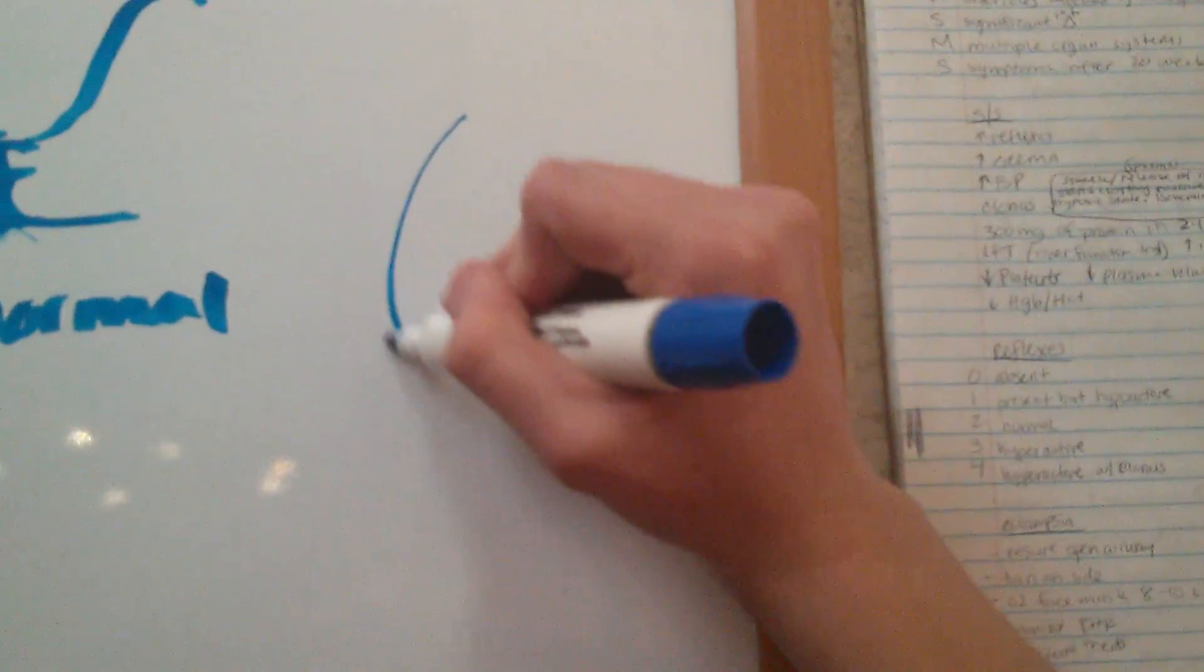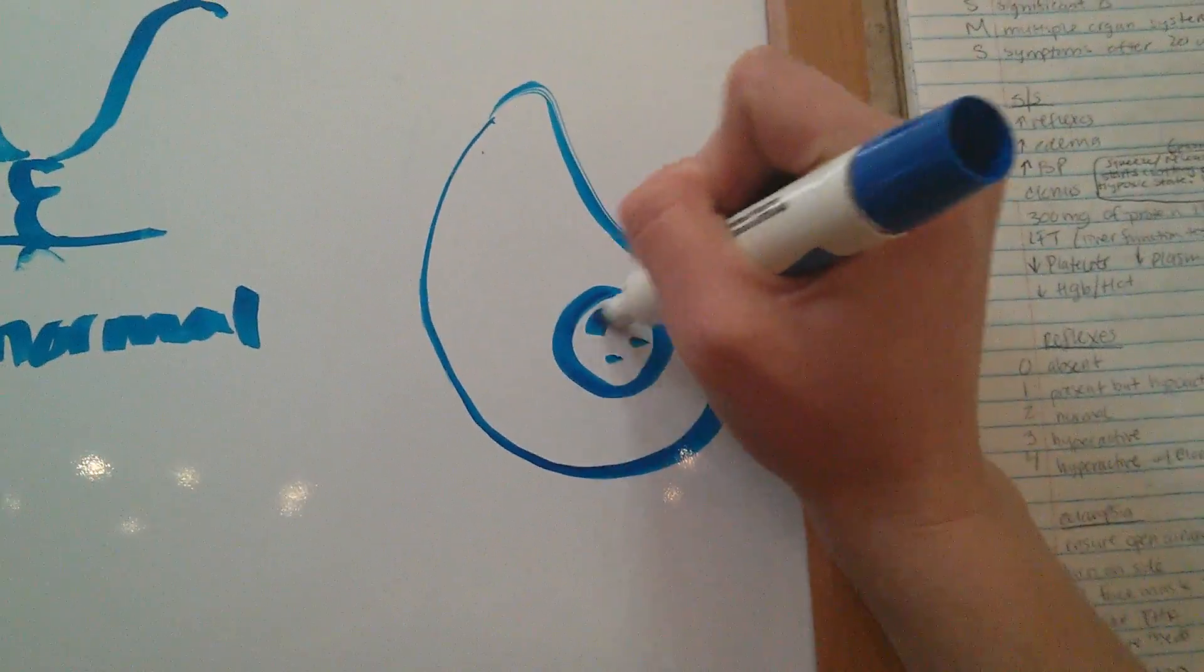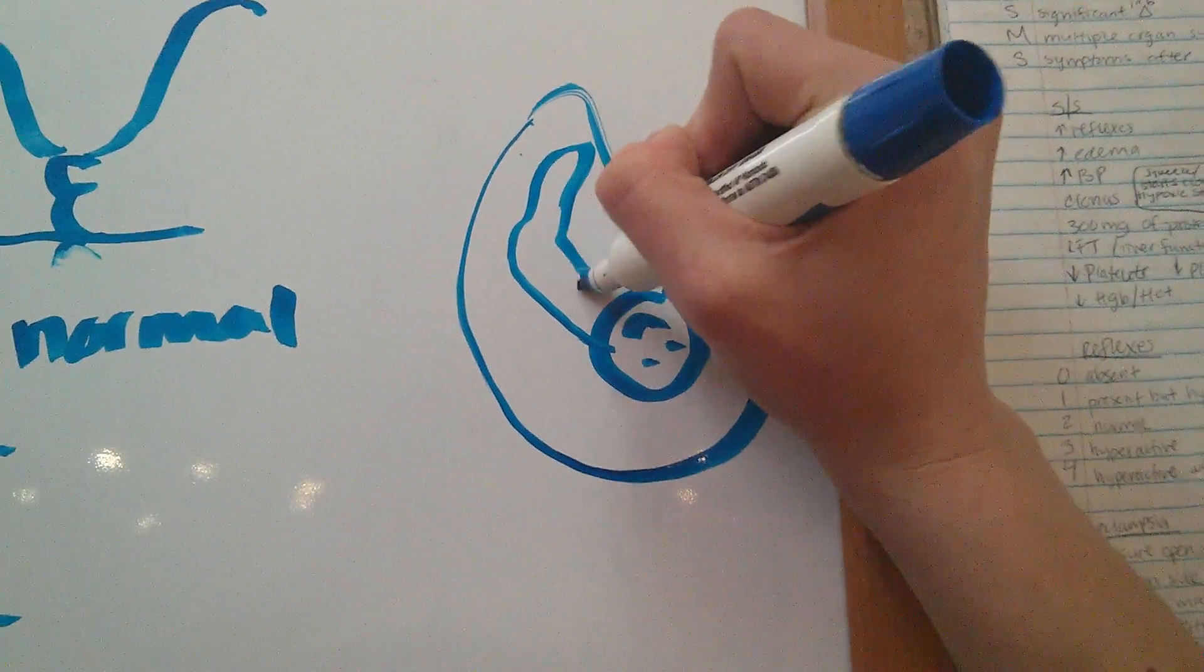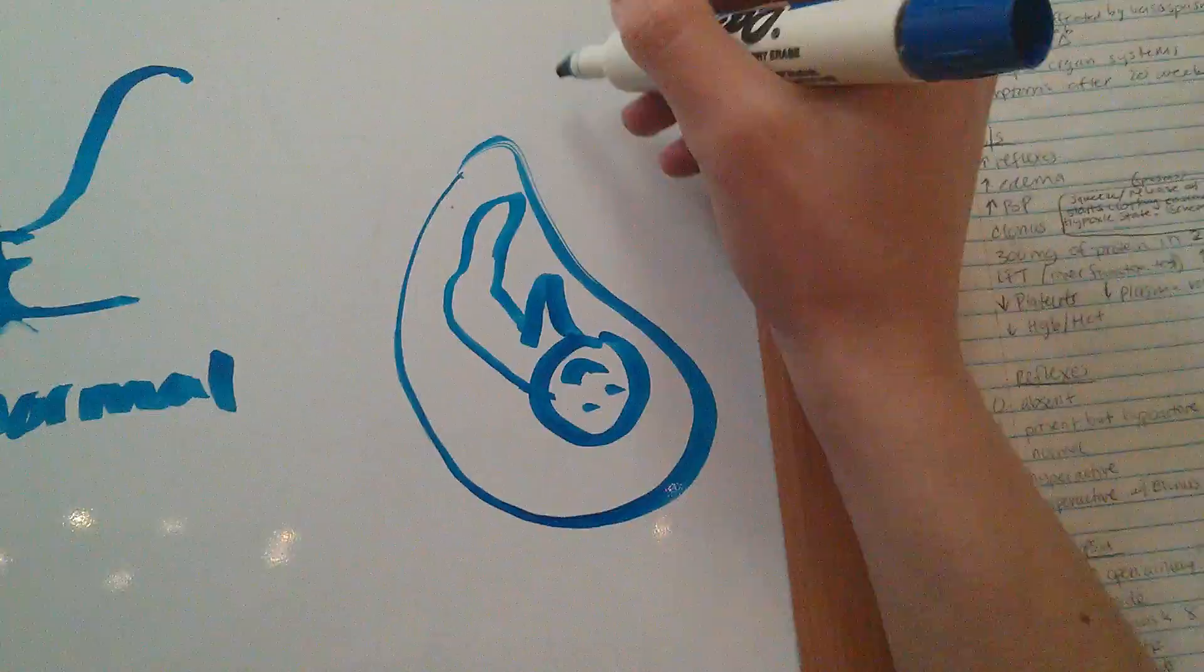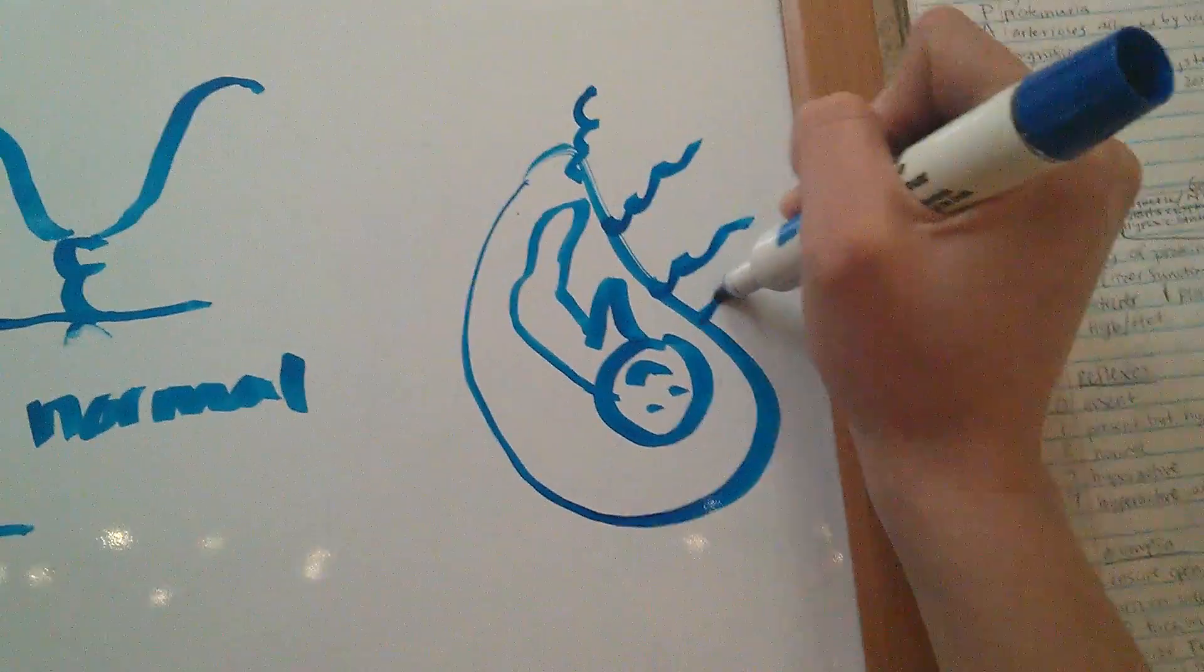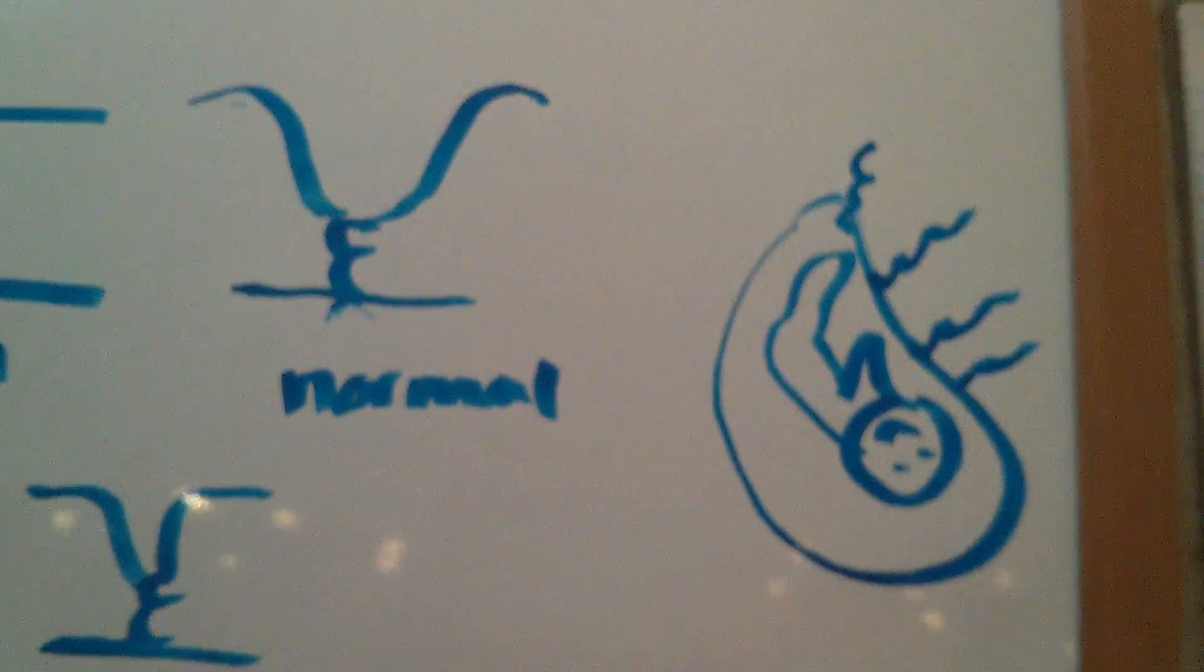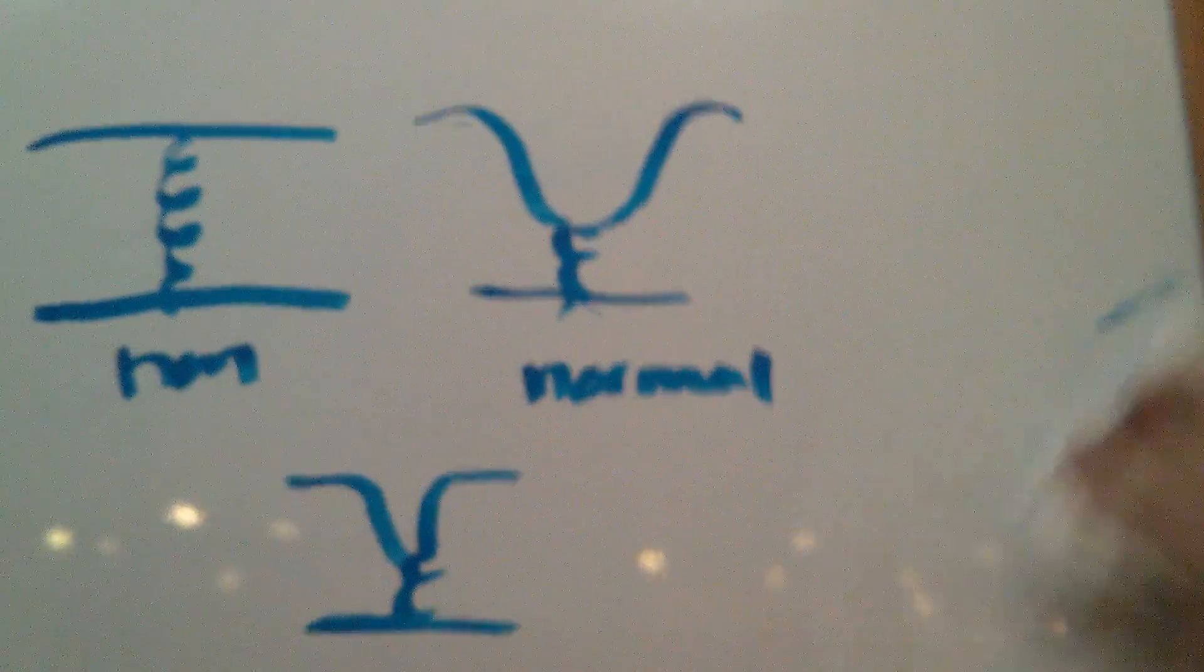The placenta looks like this. You have the placenta and here's the baby and the feet and the hands or whatever, and you have the spiral arteries coming in here. So you're going to want it to open up a lot to have room for that perfusion.